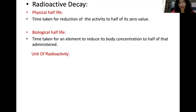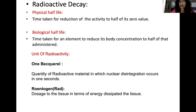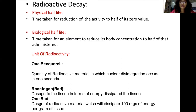Let's discuss a few units of radioactivity. One Becquerel — named after Sir Antoine Becquerel — is the quantity of radioactive material in which one nuclear disintegration occurs per second. Another unit is the Curie, which can be derived from the Becquerel by calculation. The roentgen, or RAD, is the most commonly used unit. It is the dosage to the tissue in terms of energy dissipated: one RAD is the dose of radioactive material that dissipates 100 ergs of energy per gram of tissue.